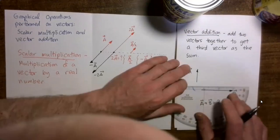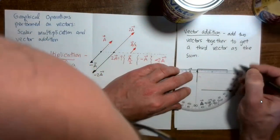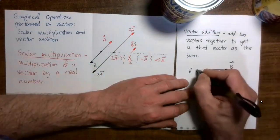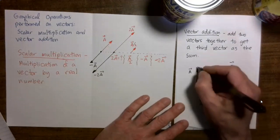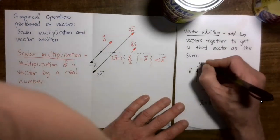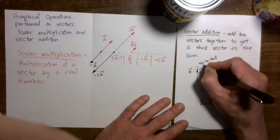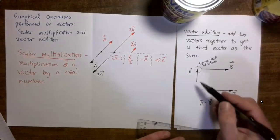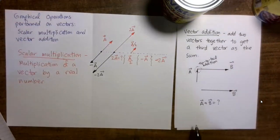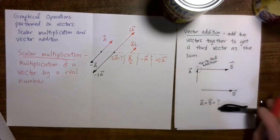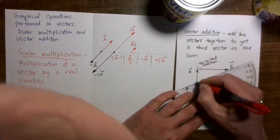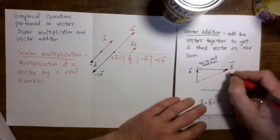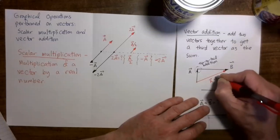We take vector b, move it over, and place it so that the tail of vector b touches the tip of vector a. This is what we call tip-to-tail addition — it's called that because the tip of one vector is touching the tail of the other. Once I have those two vectors placed with the tip of one touching the tail of the other, I can draw the vector sum a plus b by going from the tail of vector a to the tip of vector b. So this would be vector a plus b.